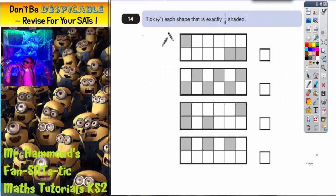Question 14 is all about shapes and fractions. It says tick each shape with exactly one quarter shaded. Now a quarter of what exactly?